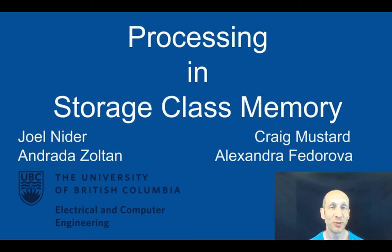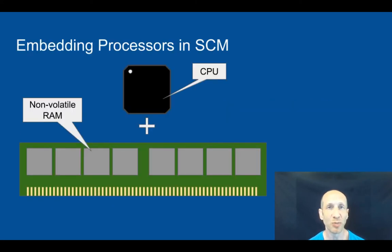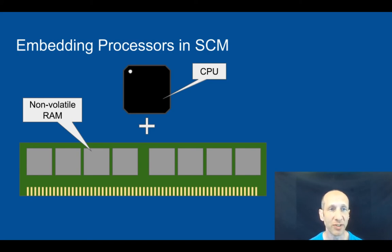This is a very interesting story about an idea that we had and what we did with it. We heard about a company that started to produce new hardware called PIM, Processing in Memory. The PIM is meant to embed small processors inside DRAM. We thought: what would happen if we took this PIM architecture and applied it to storage class memory? The idea is simple — you take some kind of processor and embed it inside the non-volatile RAM, the storage class memory, so that we can process data in place.